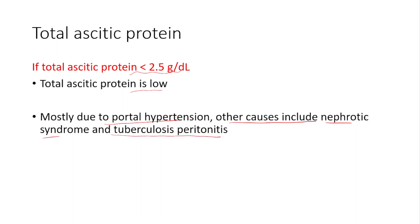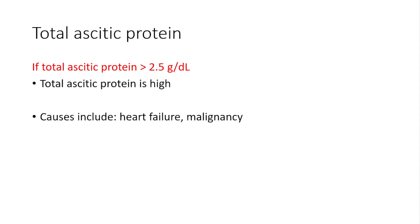Tuberculous peritonitis can also cause the ascitic protein to be less than 2.5 g/dL. If the total ascitic protein is higher than 2.5 g/dL, it is high, and this is caused by malignancy, infections, and heart failure.